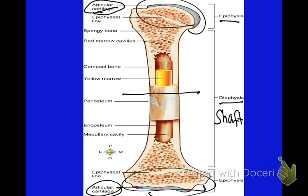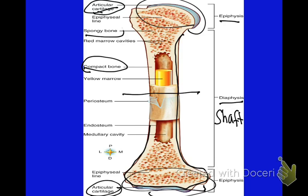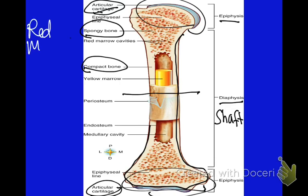The epiphyses are the ends of the bone; the diaphysis is the shaft of the bone. Along the entire outside of the bone, lining it, is our compact bone — with the most compact bone being in the shaft. At the ends of the bone, we have spongy bone. Spongy bone is where we find our red marrow.